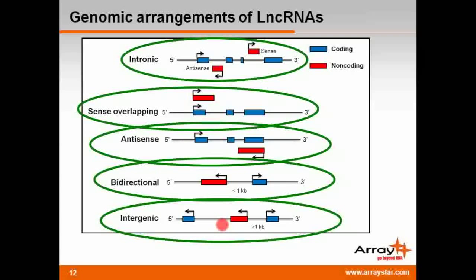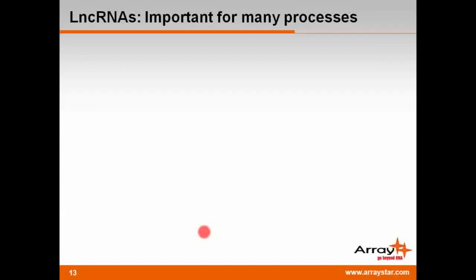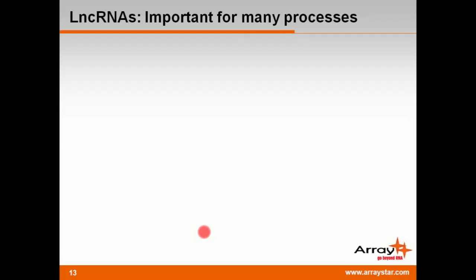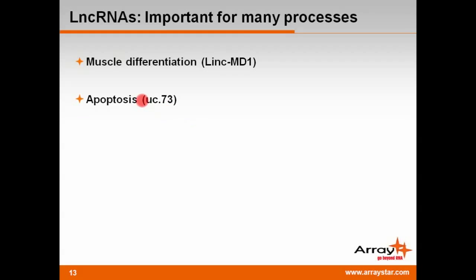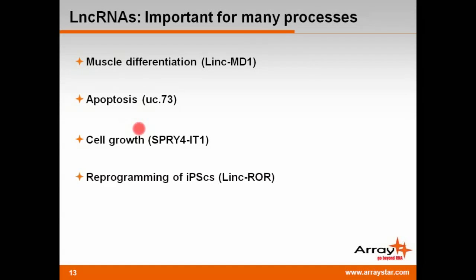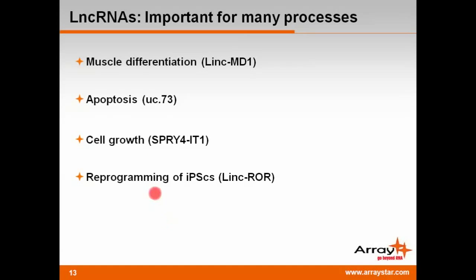Bidirectional LNCRNAs are transcribed in divergent orientation with an mRNA that is less than 1,000 base pairs away and may share a promoter with that mRNA. Intergenic LNCRNAs are transcribed without any overlapping protein coding genes at all and are located more than 1,000 base pairs away from a protein coding gene. These intergenic LNCRNAs are also known as large intergenic non-coding RNAs or lincRNAs. Thanks to intense research over the past six years, LNCRNAs are now known to play critical roles in diverse biological processes, such as control of muscle differentiation, modulation of apoptosis, regulation of cell growth, reprogramming of induced pluripotent stem cells, and development.